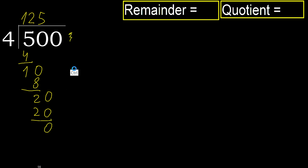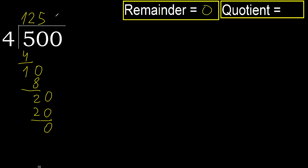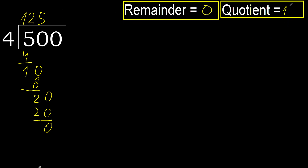That is not a number, therefore finish it. 500 divided by 4 is 125.